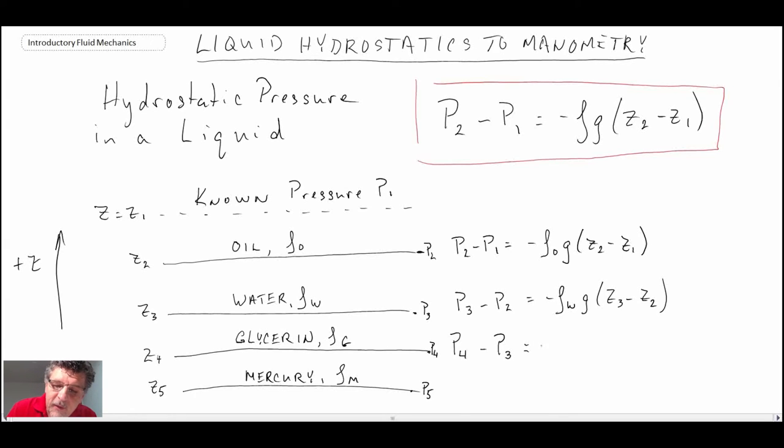For P4 minus P3, it would be the density of glycerin times the gravitational constant times the difference in thickness, which would be Z3 minus Z4. You have to be very careful with making sure that you keep the convention consistent in your equation. And then finally, for the bottom, P5 minus P4 equals minus the density of mercury times gravitational constant times Z5 minus Z4.